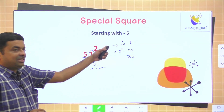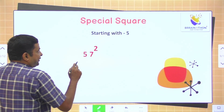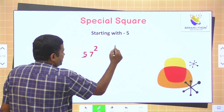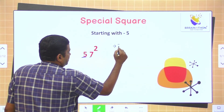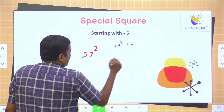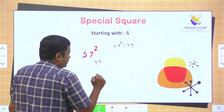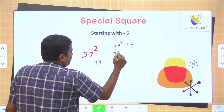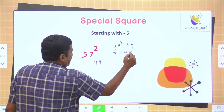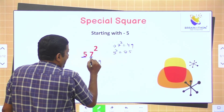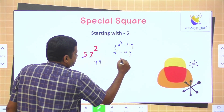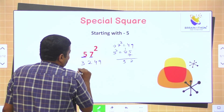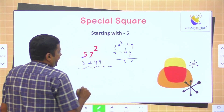You can just follow these steps. One more sum: 57 square. This number starts with 5. First step: 7 square is 49 — we already have a 2-digit number, so no need to put 0. Now find the square of 5: 5 square is 25. Then add this unit digit 7: 25 plus 7 is 32. So our final answer is 3249.